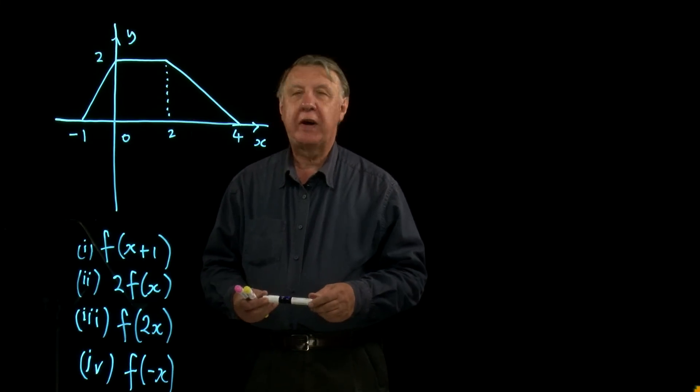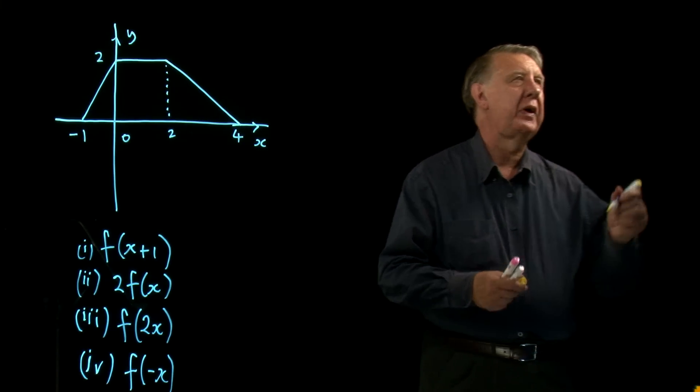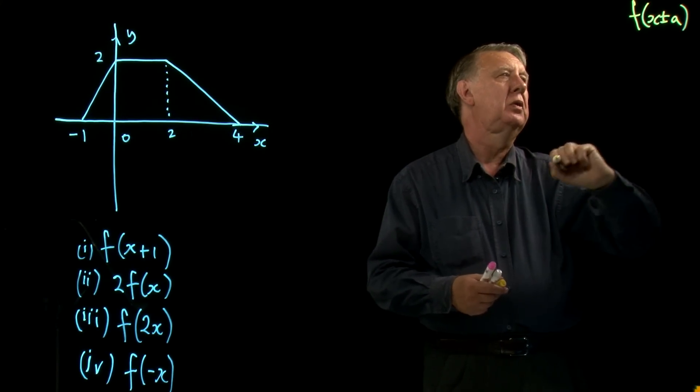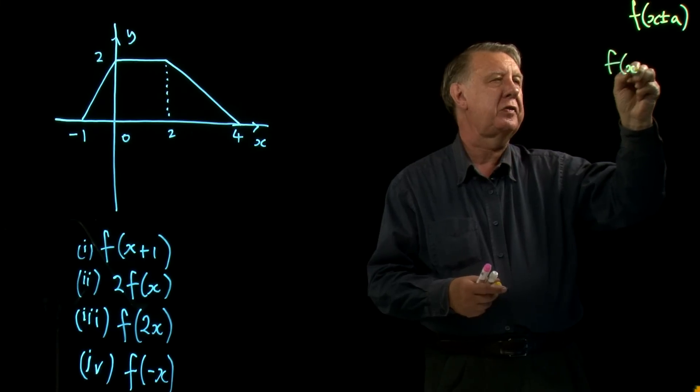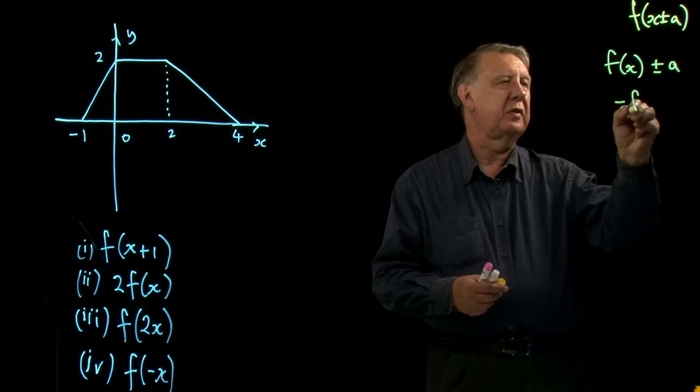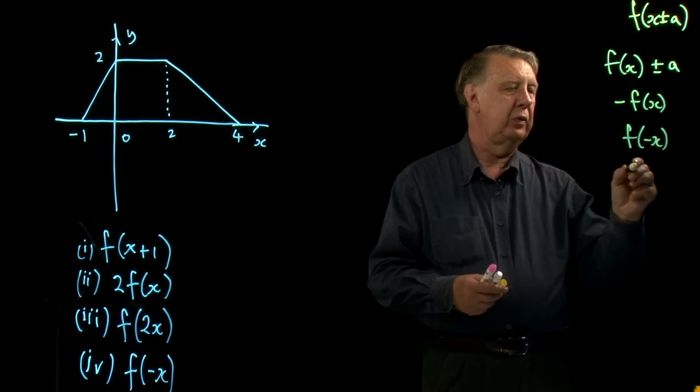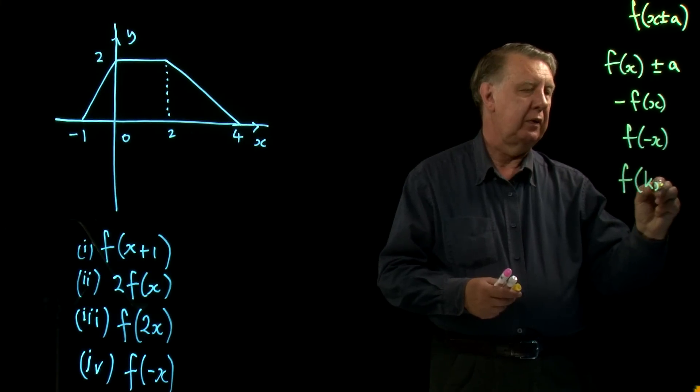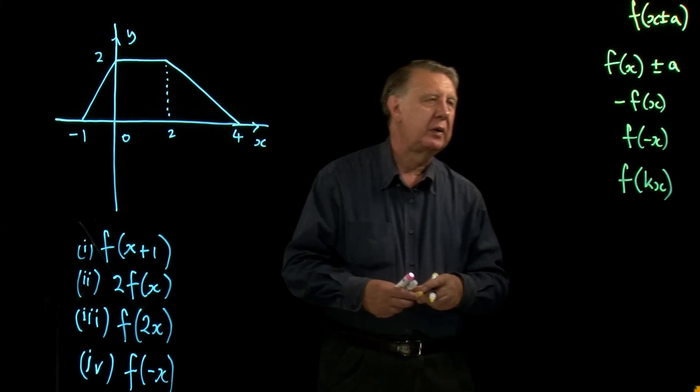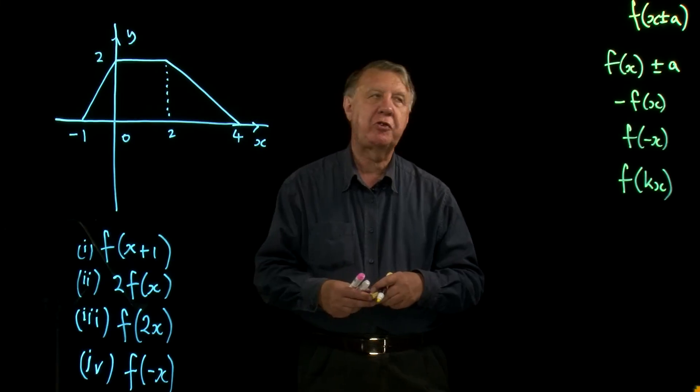Right, so we've got our transformation rules - six of them really. Shall we just pop them down over here? We've got the function x plus or minus a rule, we've got the minus function x, the function minus x, and also the function kx. So actually seven there if we count.